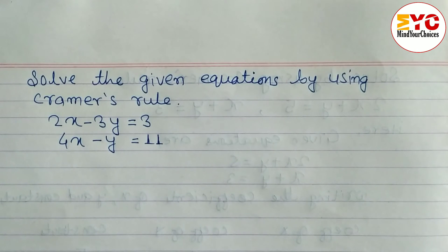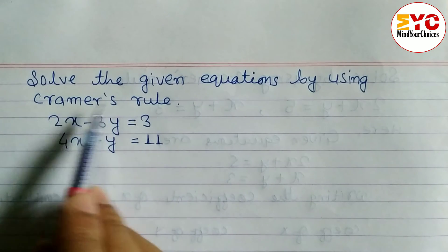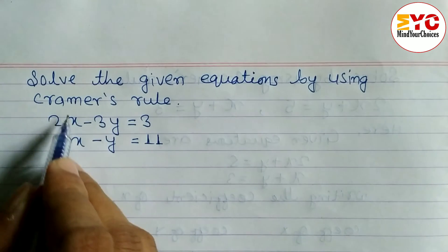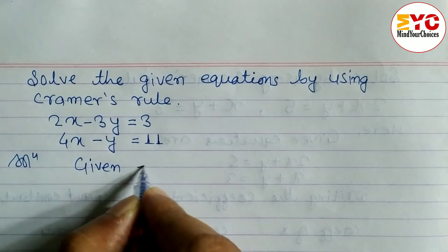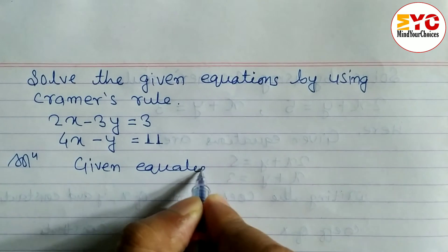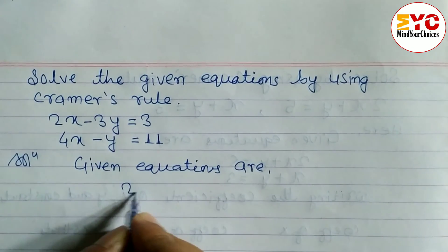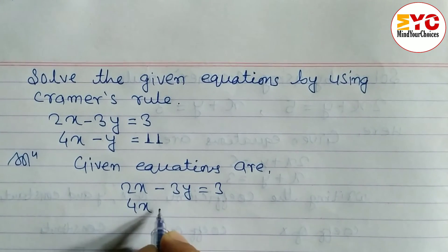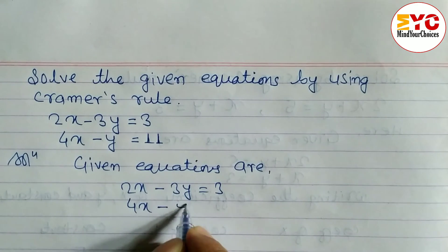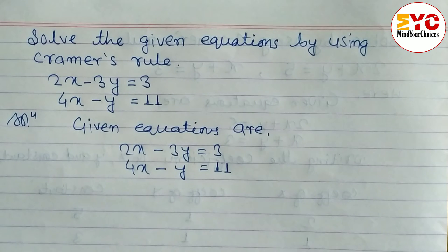Hello everyone. Today in this video we are going to learn how to solve simultaneous equations using Cramer's rule. We have two equations given: 2x minus 3y is equal to 3, and 4x minus y is equal to 11.